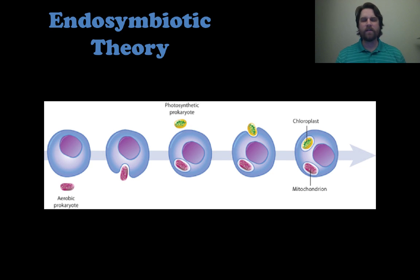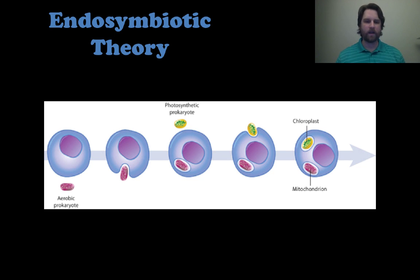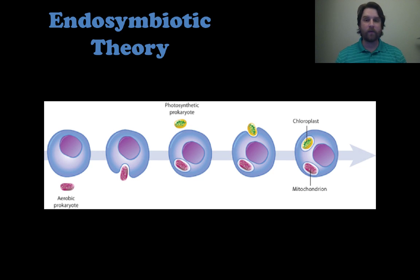This is the prevailing theory for how mitochondria and chloroplasts got into eukaryotes. We used to all be prokaryotic cells, and then along the way the mitochondria — which used to be its own bacterium — was engulfed by another prokaryote and just stayed there because they had such a great relationship and were both able to benefit from it.